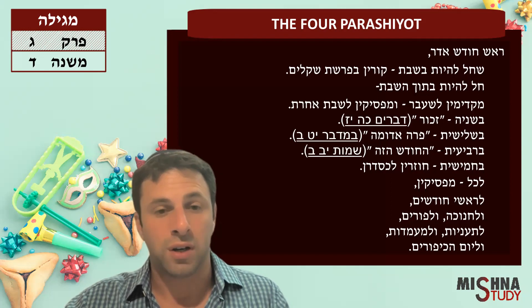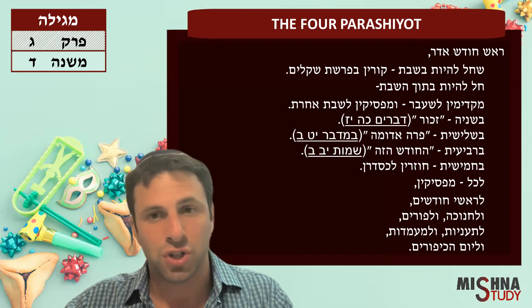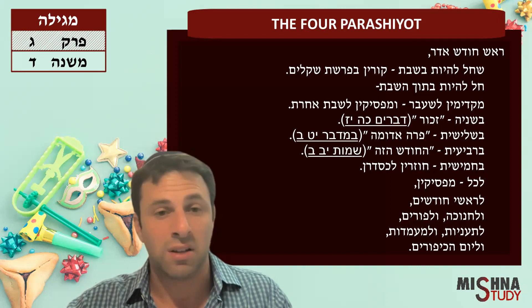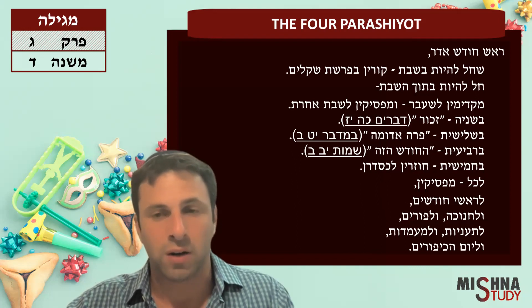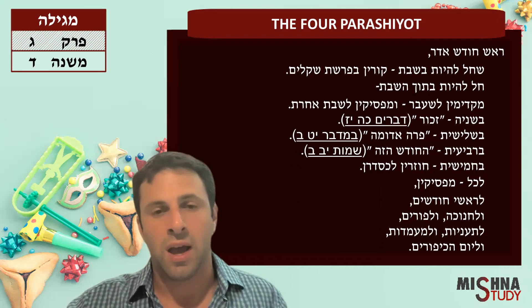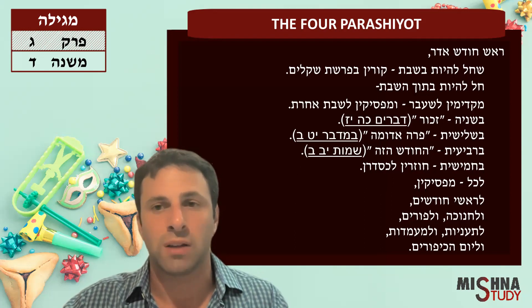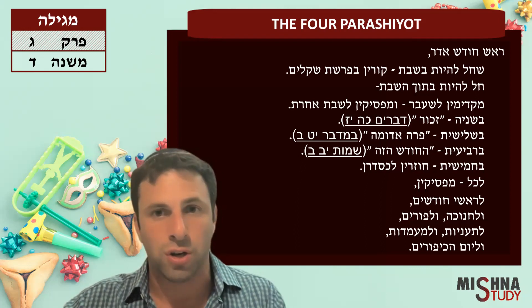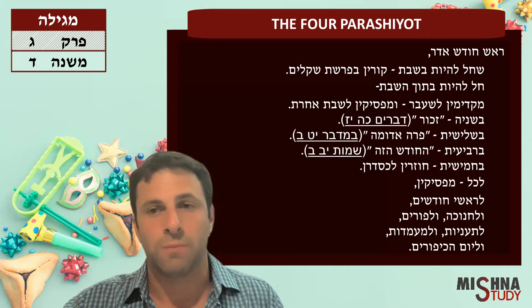If Rosh Chodesh falls out on Shabbat, then you have Parashat Shekalim and no skips — Shekalim, Zachor, Parah, HaChodesh. This is our Mishnah: Rosh Chodesh Adar on Shabbat — that's when you read Parashat Shekalim.